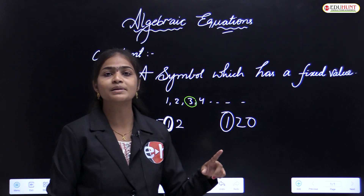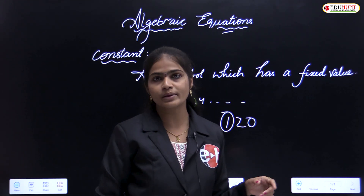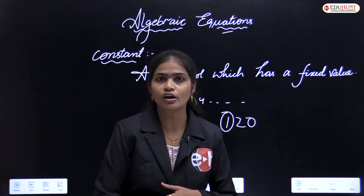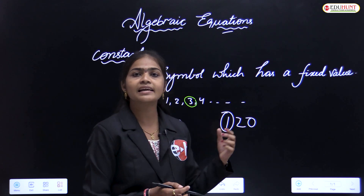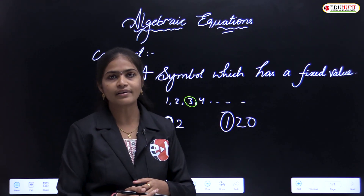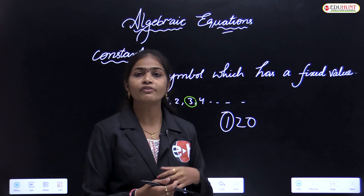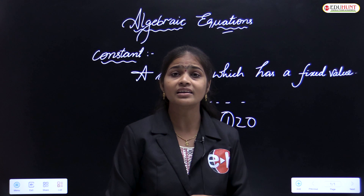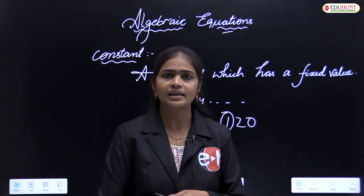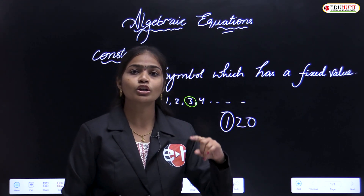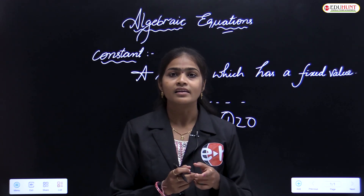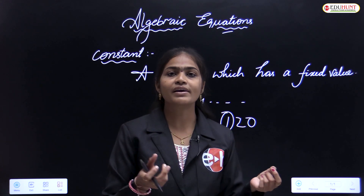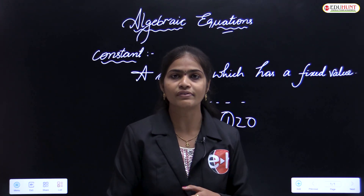Variables are literals — English alphabets or Greek alphabets — and constants are numerical values. After variable and constant, we discuss the term. A term means the combination of a variable and a constant, or a single variable, or a single constant.